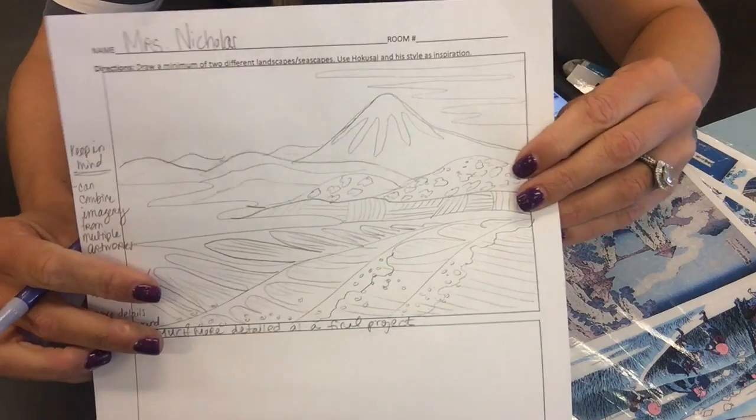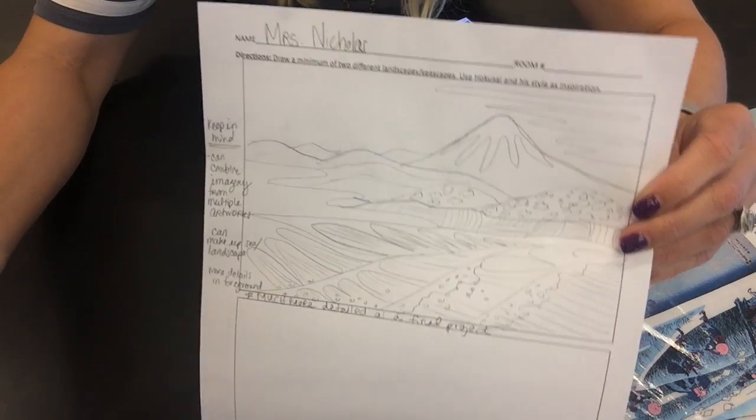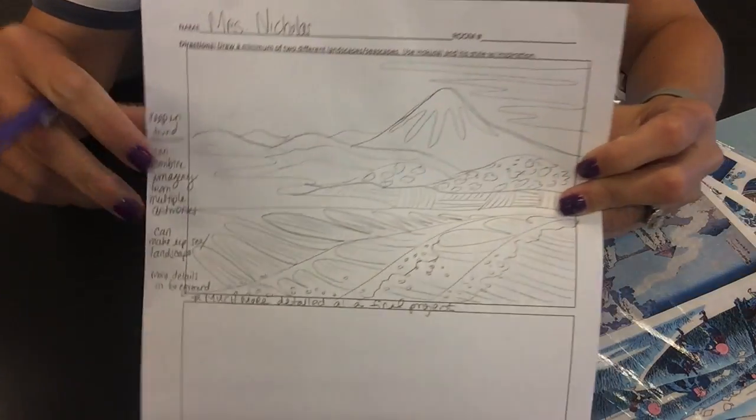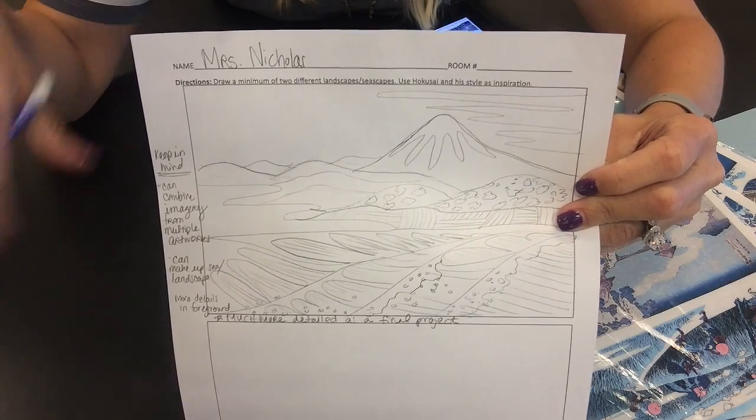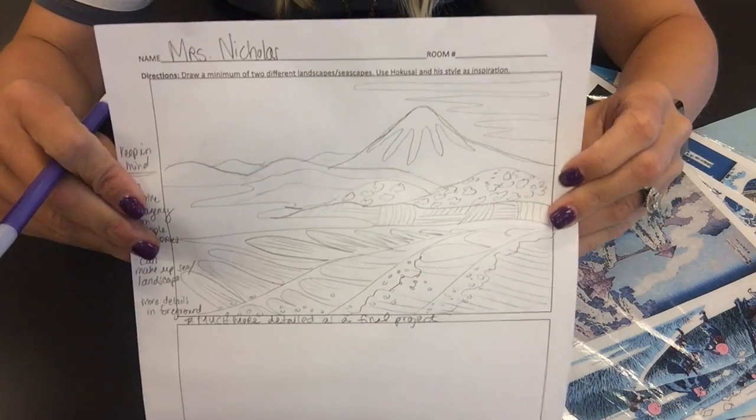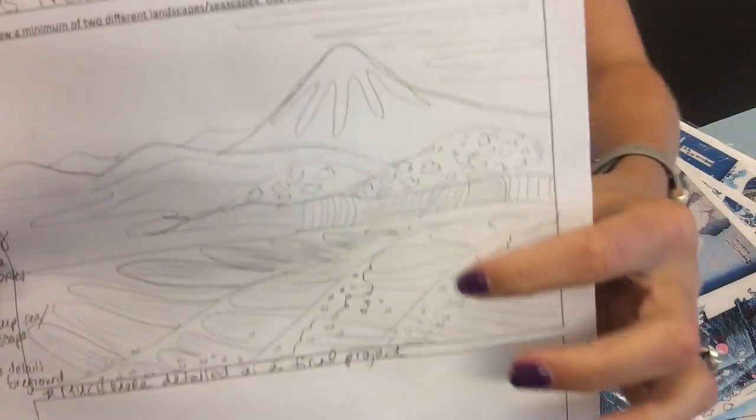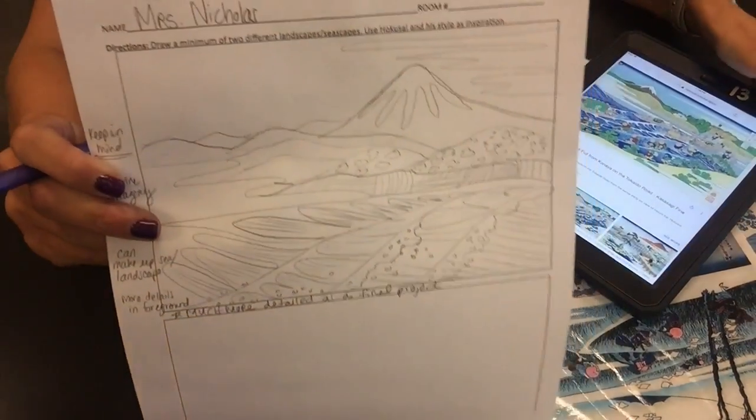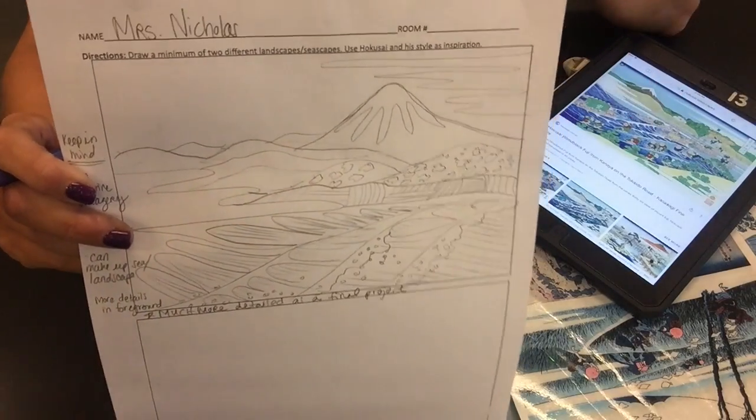All right guys, so I finished one of my sketches so far and I just kind of jotted down some things that I wanted you to keep in mind while you were working on your sketches. First of all, you are more than welcome to take ideas directly from Hokusai's images that you see. So clearly I have Mount Fuji in mind here. I was really inspired by this one. I thought this was a really cool image of his. So feel free to be directly inspired by his work and kind of mimic his images if you'd like.